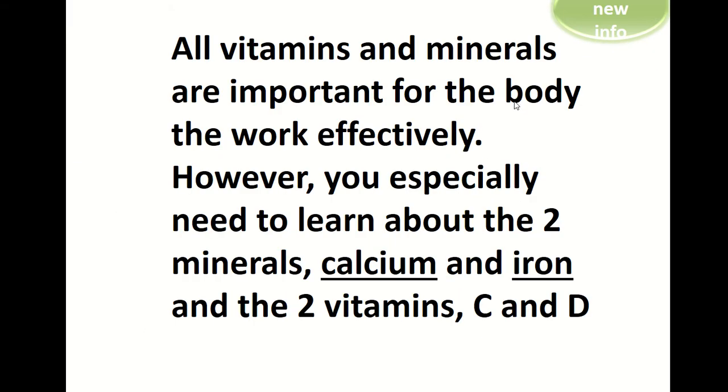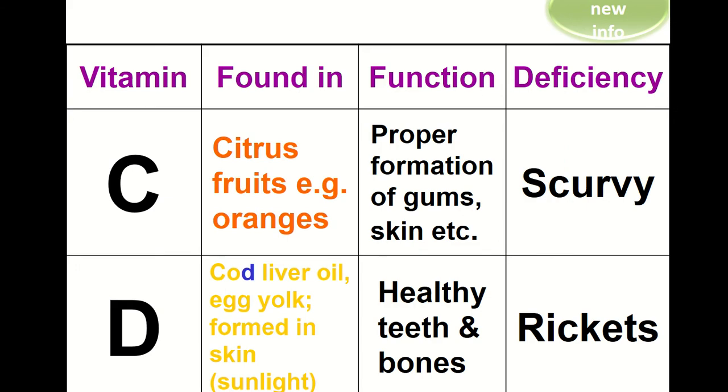So all vitamins and minerals are important for the body to work effectively. However, you especially need to learn about two minerals, calcium and iron, and two vitamins, C and D. So the two vitamins are vitamin C and vitamin D. Now vitamin C is what we worked with today. Now if you don't have enough vitamin C in your diet, you suffer from a disease known as scurvy, and that happens around your gums and in your skin. And if you're looking to get some vitamin C into your diet, you need to eat some fruits, mostly citrus fruits such as oranges.